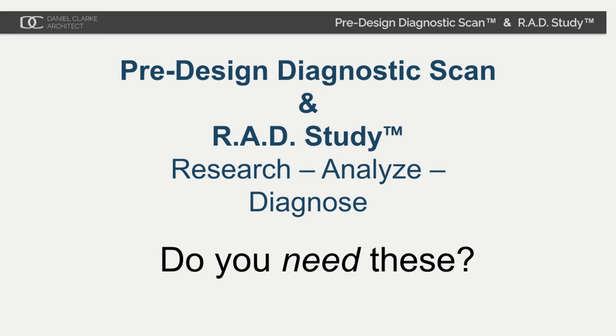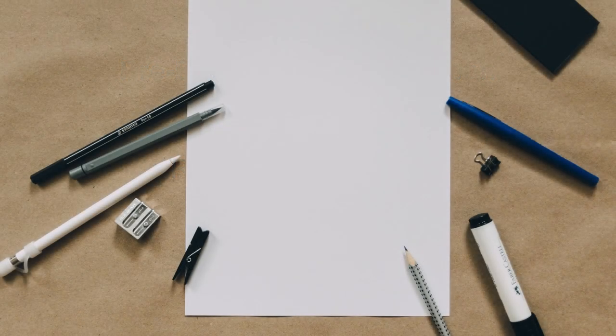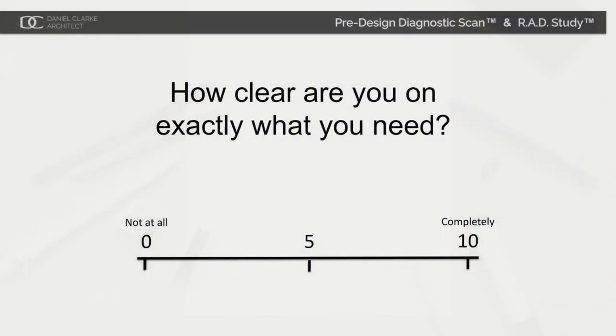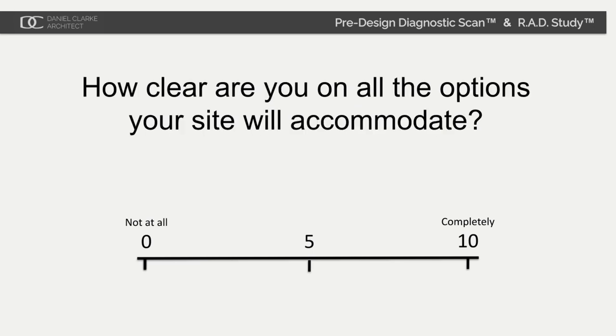Here's a quick test to find out. Take out a pen and paper and give yourself a score for each of the following questions. Out of 10, how clear are you on exactly what you need? Out of 10, how aware are you of all the various options your site will accommodate?